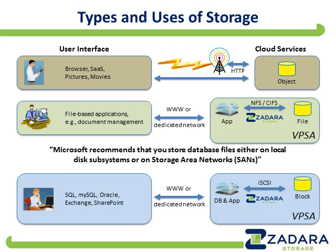Block storage is typically what databases use because it's ideally suited for making many rapid small changes to a given data set. It's sometimes known as structured data because the changes happen in very specific places, whereas file storage is unstructured. Block storage accounts for about 20% of enterprise data, with file storage making up the remaining 80%. Object storage is incredibly successful and good, but it doesn't serve all use cases, and most enterprise use cases rely on the more traditional storage types: file and block.